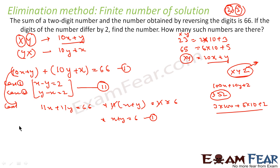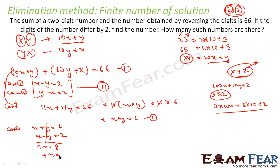For Case 1: x plus y equals 6 and x minus y equals 2. Since the coefficients are already the same, we need not multiply. Adding these two equations gives 2x equals 8, so x equals 4. Substituting back: 4 plus y equals 6, so y equals 2. Thus x equals 4 and y equals 2, giving the number 42.